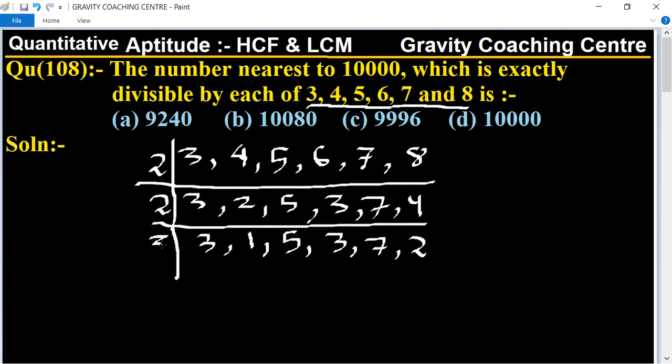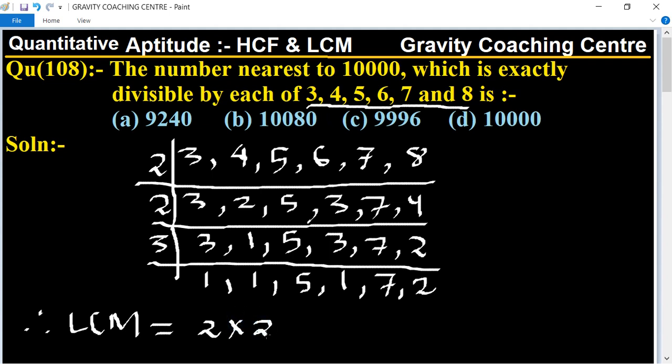Now we take the table of 3: 3, 1, 3, 1, 7, 2. Therefore LCM equals the product of this number: 2 multiplied by 2 multiplied by 3 multiplied by 5 multiplied by 7 multiplied by 2, and its product equals 840.